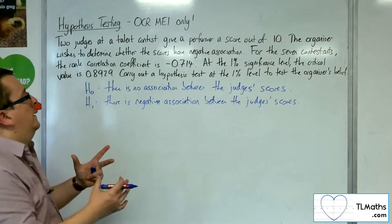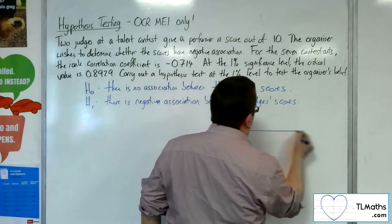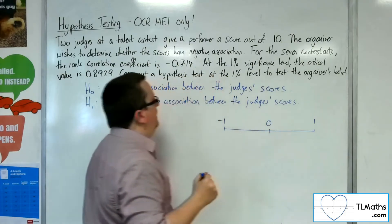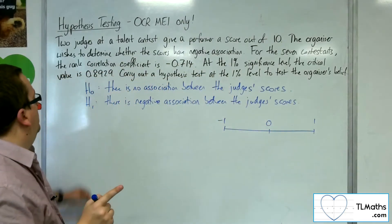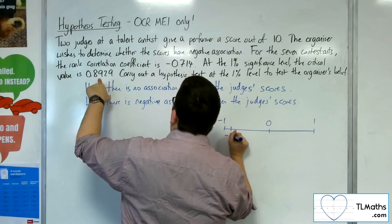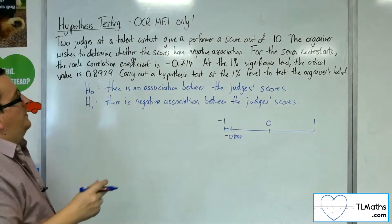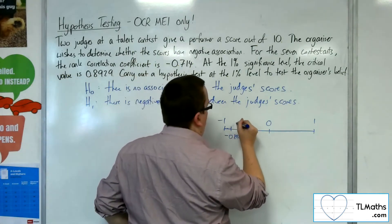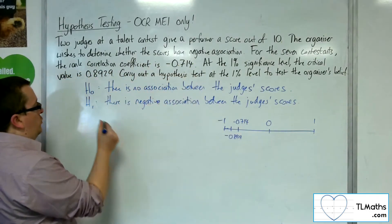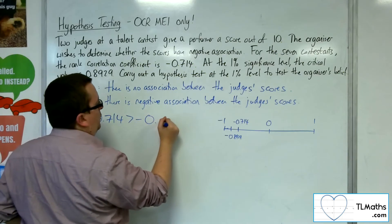So we've got this critical value, 0.8929. If we draw our number line — here's minus 1, here's 1, and here is 0. Now because we're looking at negative association, we're looking at the lower end. So here's your minus 0.8929, and your critical region is there. The minus 0.714 is here — and so that's not in the critical region. The minus 0.714 is larger than minus 0.8929.